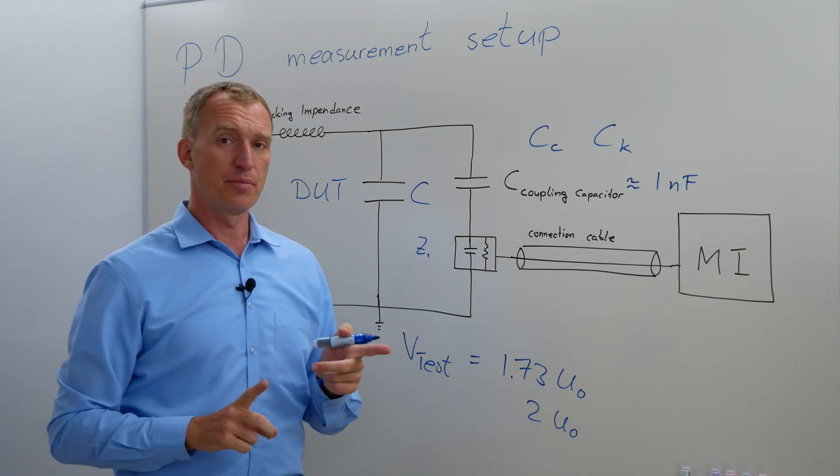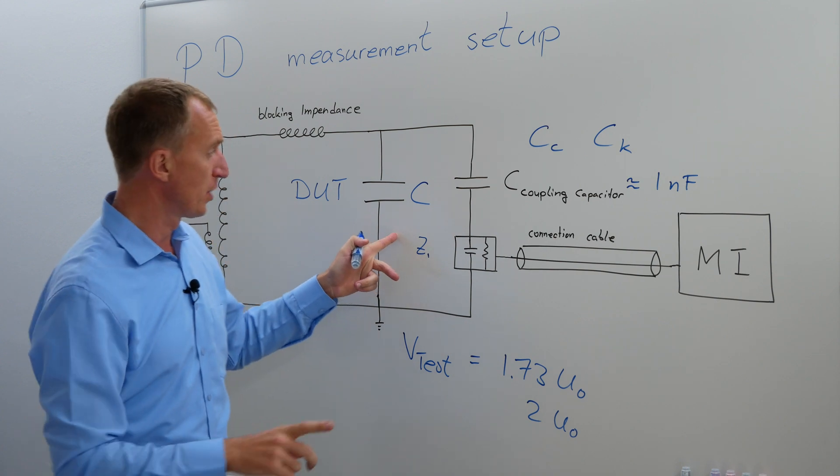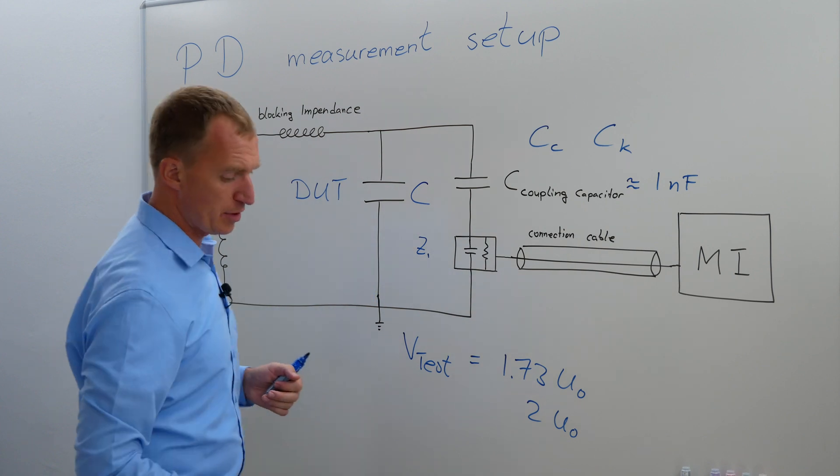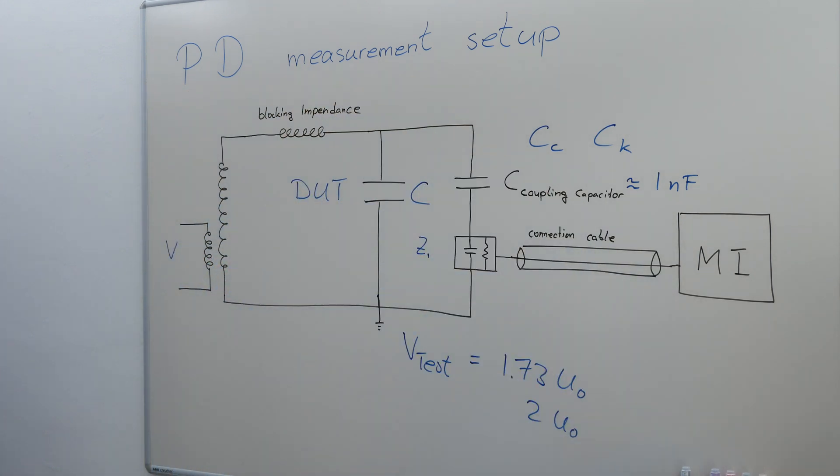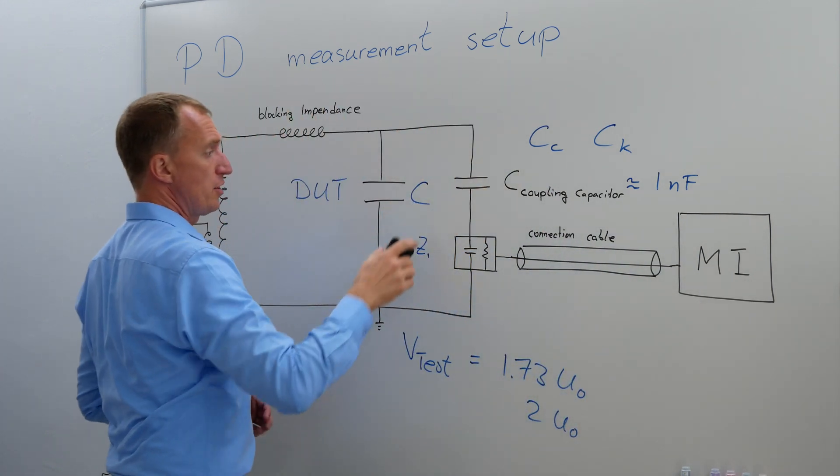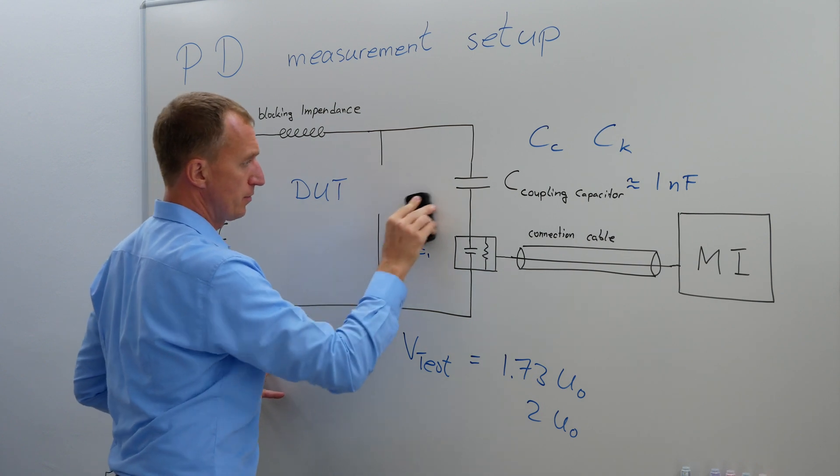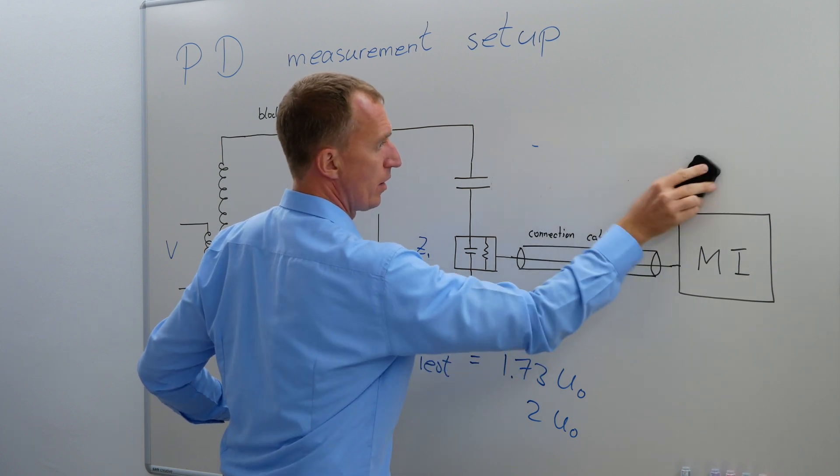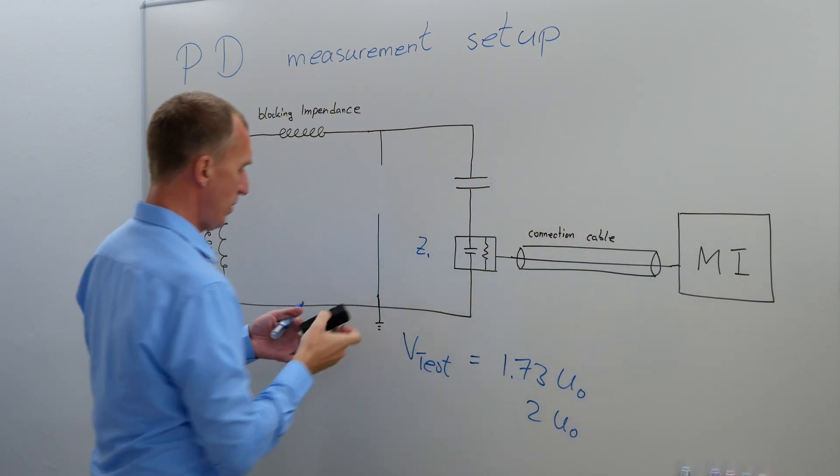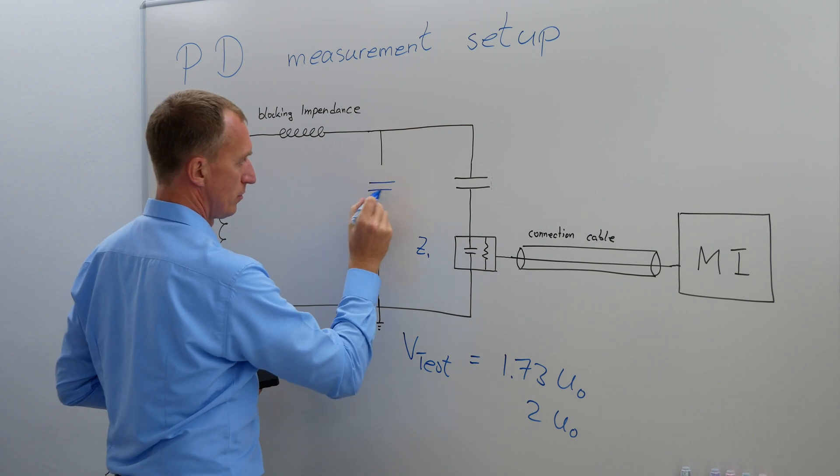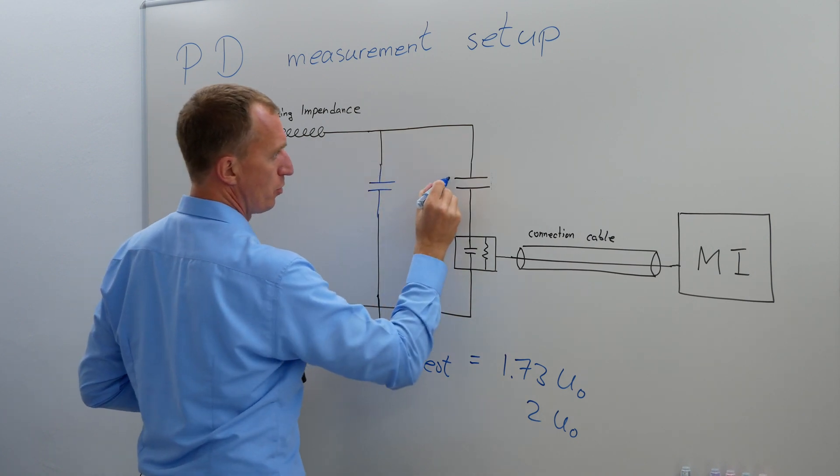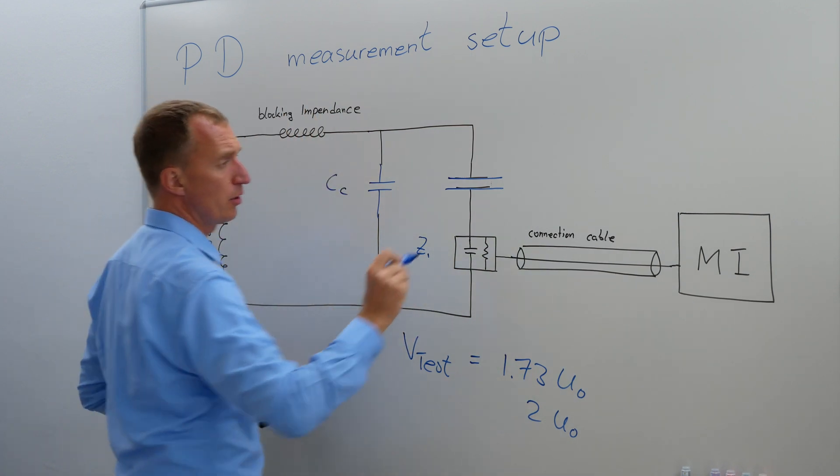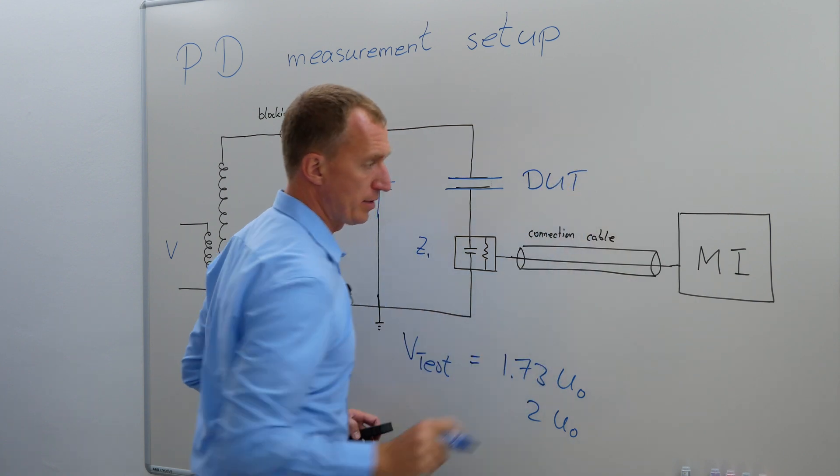However, there's a possibility that you can change this up. Right here I was drawing the capacitance of our test object rather large, but there's a possibility to exchange these two. So we're going to put our coupling capacitor over here and our device under test here. So this would be our coupling capacitor now, and this would be our device under test.